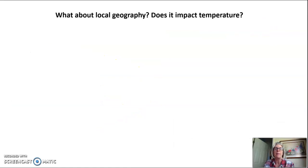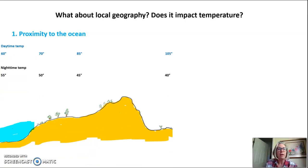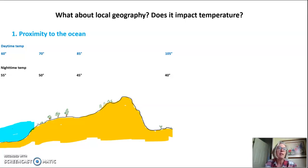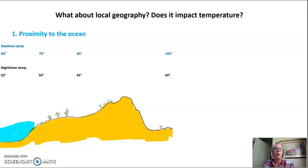What about local geography — how does it impact temperature? Is it all about your position on Earth? No. Your proximity to the ocean plays a huge role in temperature. Looking at a cross-section from the seashore, over a coastal range, and far inland, daytime temperatures near the ocean tend to be fairly temperate — maybe an average of about 60 degrees Fahrenheit. As you move slightly inland the temperature might be about 7 degrees warmer, and as you go further inland the temperature gets warmer still. In fact, inland of a coastal mountain range the temperature can often be in the 100s.